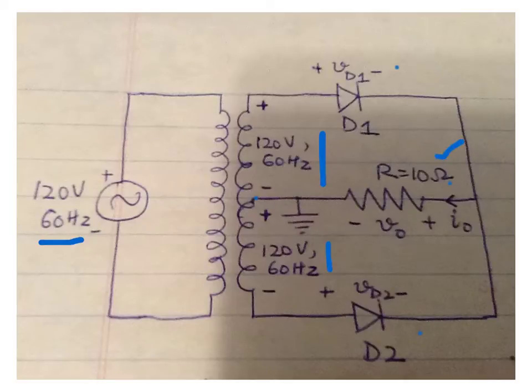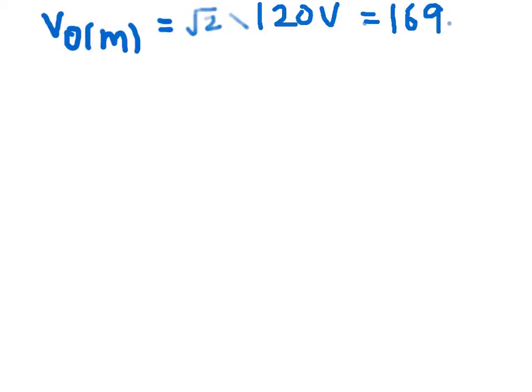We'll start solving different parts. Number one: we have to find the maximum load voltage, which you can write as V_o_m. V_o_m is given by √2 times the RMS value which is 120 volts. If you calculate this number, it gives you 169.7 volts. That's the peak value of voltage across the load as well as the peak value of the supply.